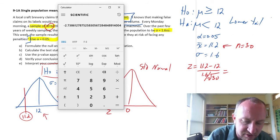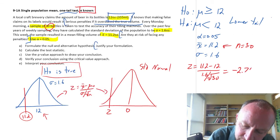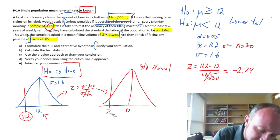I'm going to plug in our values: 11.2 minus 12 divided by 1.6 over the square root of 30, which equals negative 2.74.